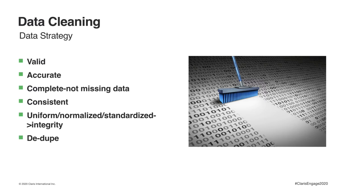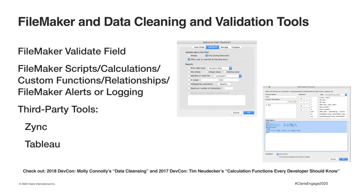Although validating and cleaning data might not seem like so much fun, it's going to reduce errors in your business. Getting the data digitally helps you digitally transform and operate your business better via this validation and cleaning task. FileMaker can help with cleaning via validation scripts, calculations, validation fields, custom functions — such as Ray Colligan's trim function — and you could also use some third-party tools. Check out Molly Connelly's data cleansing talk or Tim Newdecker's 2017 calculation functions talks for details on these tools.